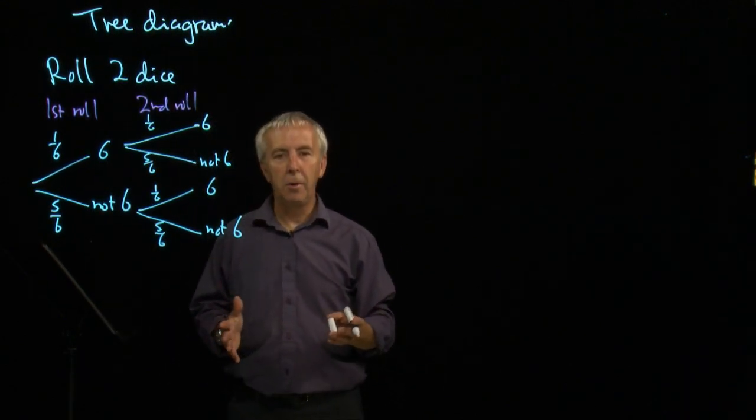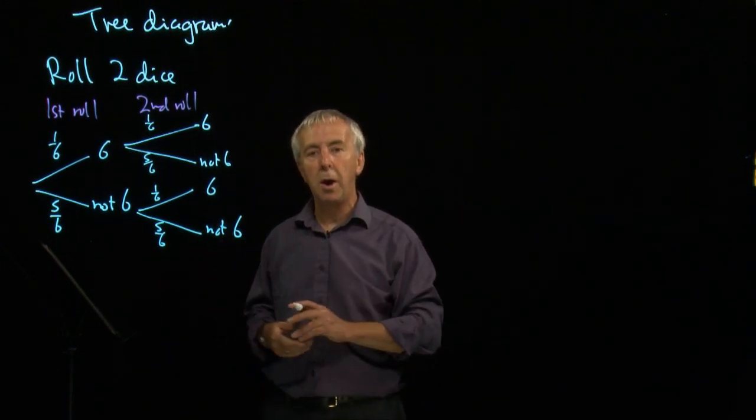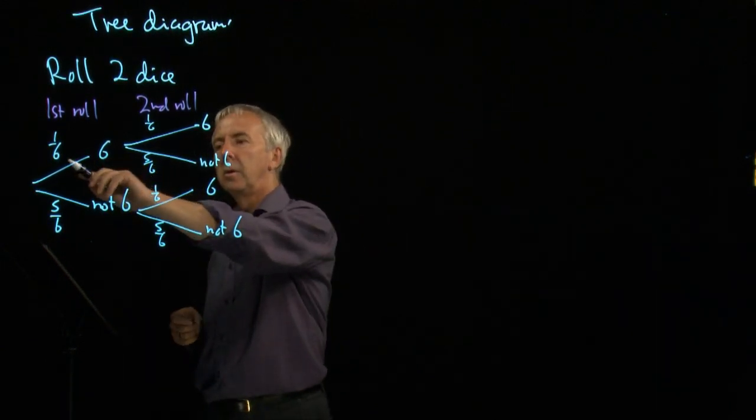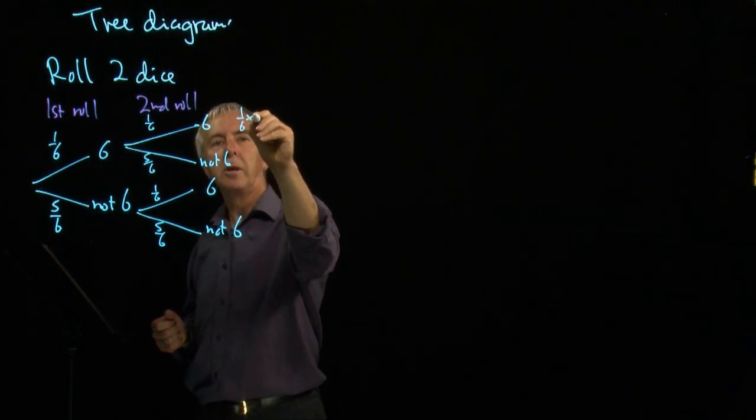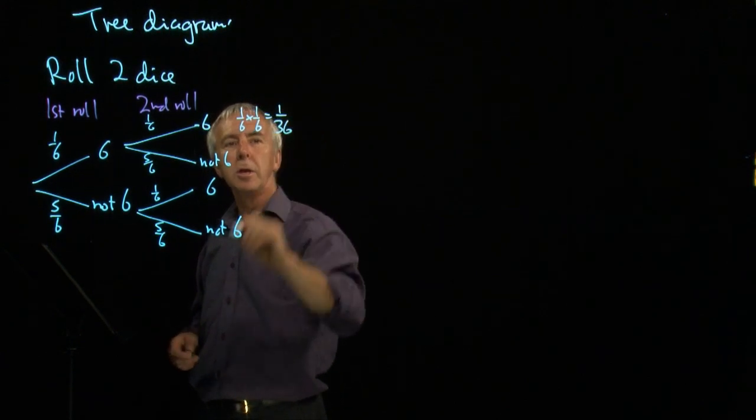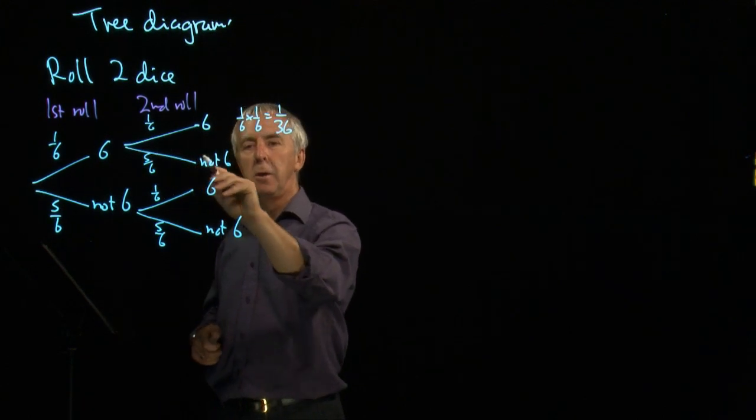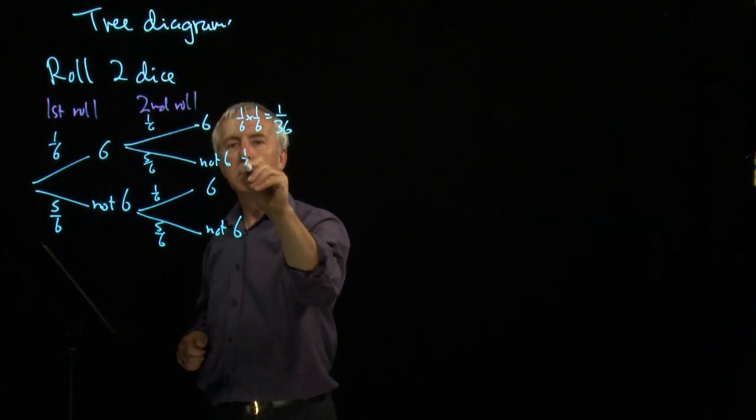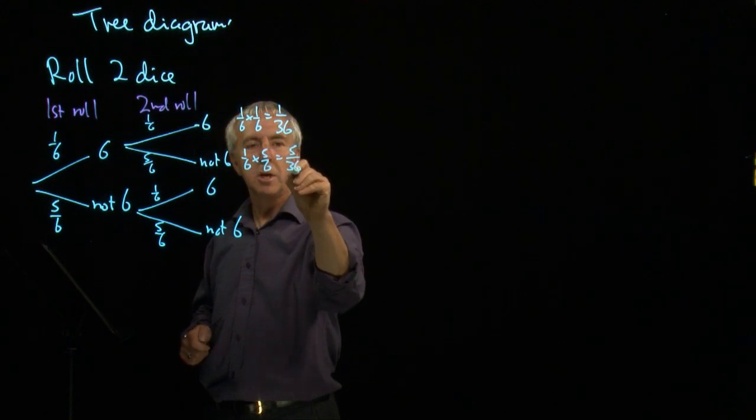Now, the rules that we've seen before said that if you want two events both to happen, you multiply the probabilities. So if you want a six and a six, we have one-sixth times one-sixth, which is one-thirty-sixth. If I want a six and then not a six, it's going to be one-sixth times five-sixths, which is five-thirty-sixths.